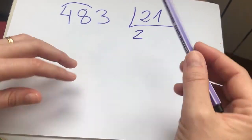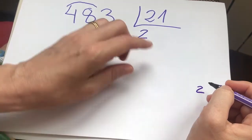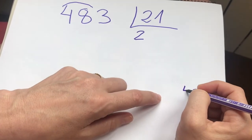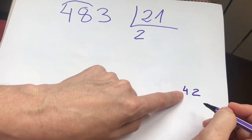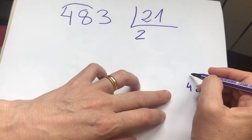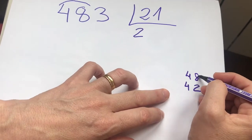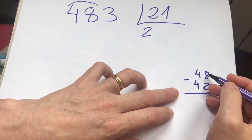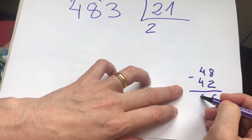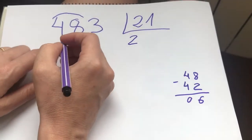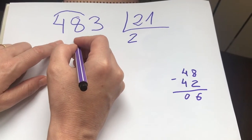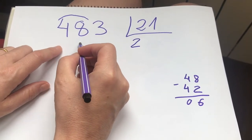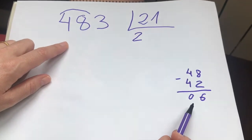2 por 1, 2. Y 2 por 2, 4. Son 42. Entonces estos 42 se los tengo que restar a 48. Pues hago la resta aquí. Del 2 al 8 hay 6. Del 4 al 4, 0. Con lo cual yo aquí tengo que poner 06. Y bajaría el 3. Esta es una forma.